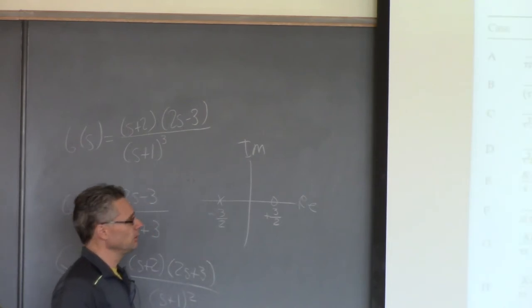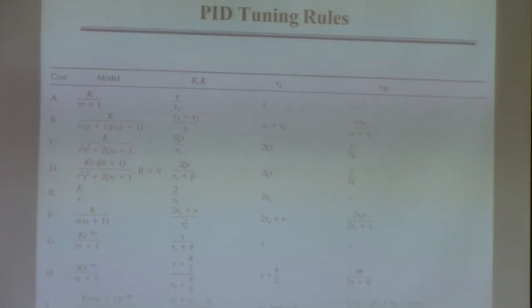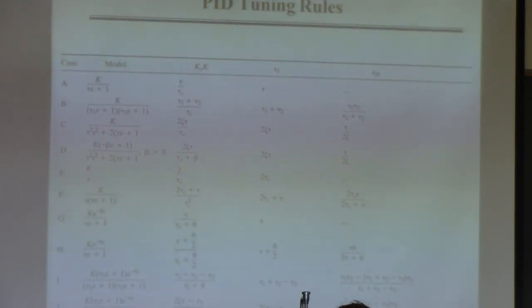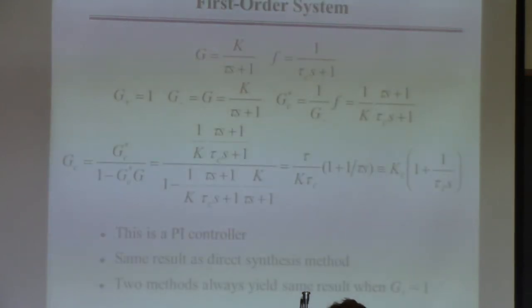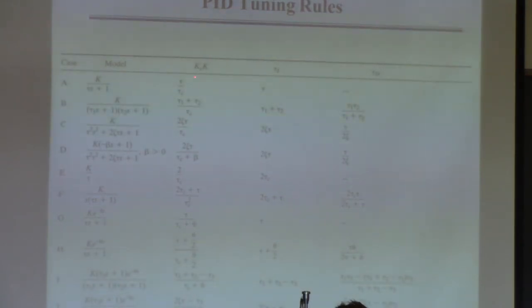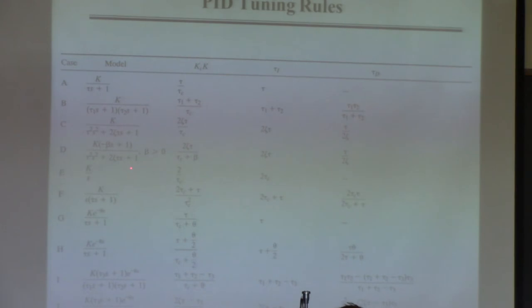The key to applying this method is to do the factorization correctly. Once you do that, you can roll with the rest in terms of implementing the equations. In the book — I believe table 12.1 or 12.3 — someone has taken a bunch of transfer functions and gone through this IMC design method to come up with a bunch of PID controllers. Just like we did the first-order example: specify the filter or desired closed-loop time constant, go through the design, and it comes out as a PI controller.